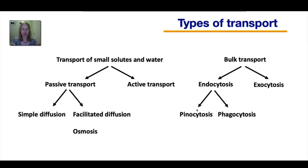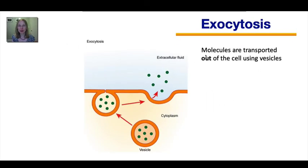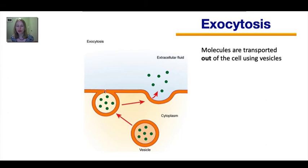Within endocytosis there are two different types we will focus on, though they're not the only types. Exocytosis occurs when molecules are transported out of the cell using vesicles. A vesicle with dissolved molecules inside delivers those molecules to the plasma membrane; the membrane of the vesicle fuses with the plasma membrane, releasing its contents out of the cell.